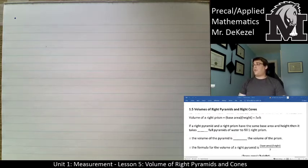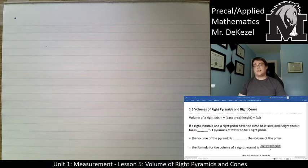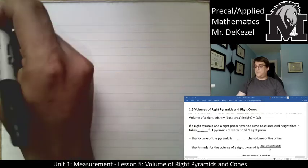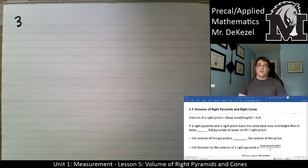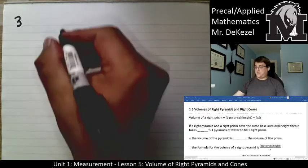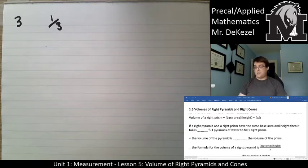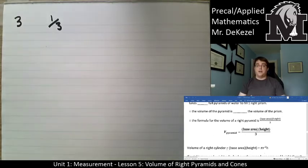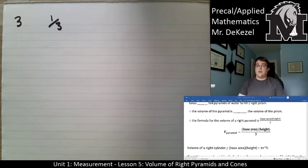The volume of a right prism — essentially a cube or rectangle with three dimensions — is length times width times height. If you were to take a pyramid that has the same height and the same base area, it would take three full pyramids of water to fill the right prism. So the volume of a pyramid is one-third the volume of the prism.